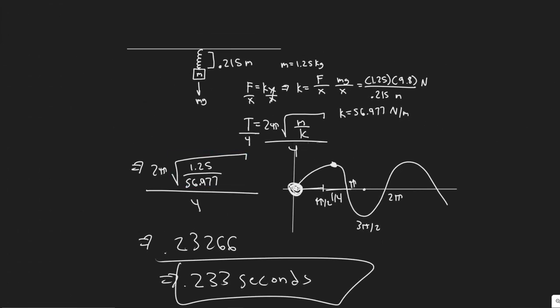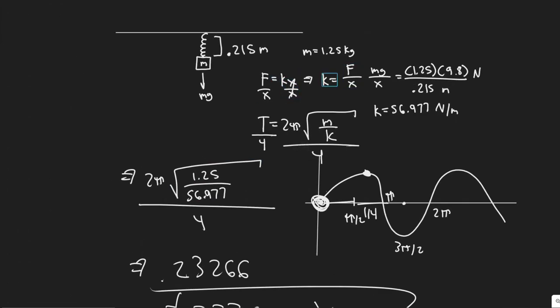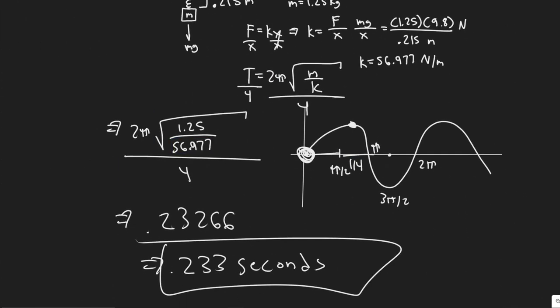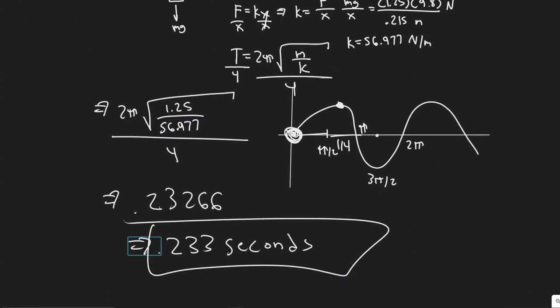But yeah, so just a quick rundown. We solved for the spring constant k so we could plug it in this equation. And then we just knew it takes one-fourth the period to return to equilibrium, so we just divided the period by 4. And yeah, so this right here is going to be your answer. And hopefully you found this video useful. So we'll see you next time.